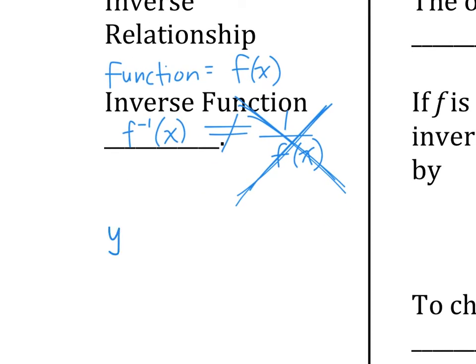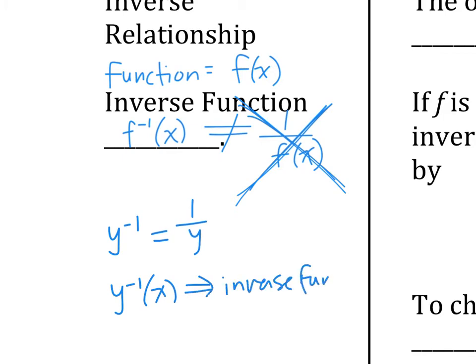For example, if you see y to the negative 1 and y to the negative 1 of x, they are very different. If you see y to the negative 1, that is 1 over y. If you see f inverse of x, that means inverse function. So 1 over y is just the reciprocal, but y to the negative 1 of x is the inverse function - meaning we took the original function and did something to it. It's the inverse, and it's a function, not just a number.